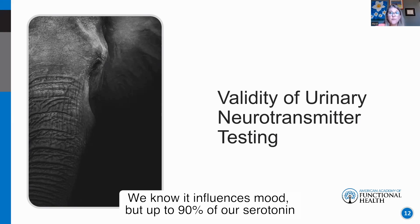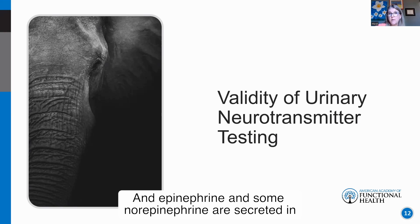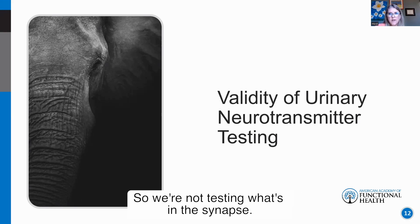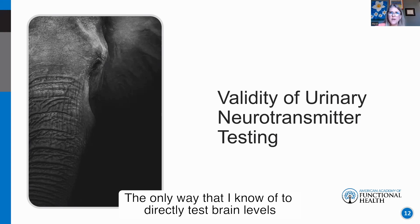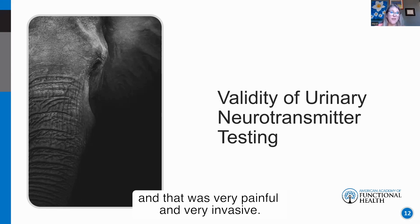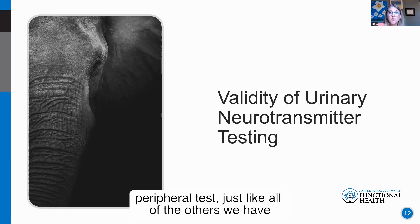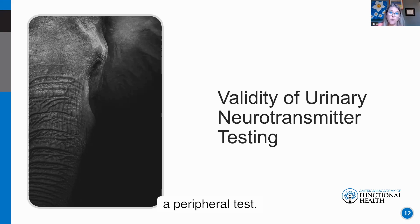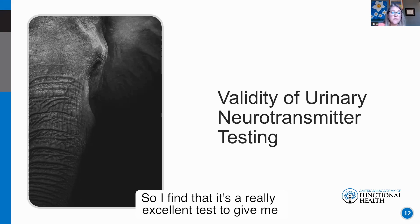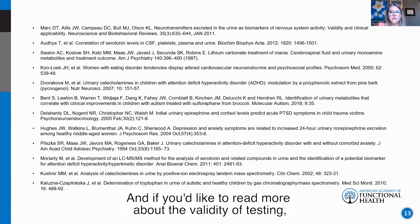Take serotonin as an example — it influences mood, but up to 90% of serotonin is actually secreted in the gastrointestinal tract. Epinephrine and norepinephrine are secreted in the periphery as part of the stress response. So we're testing whole-body levels of neurotransmitters, not just what's in the synapse. The only way to directly test brain levels would be a spinal tap to collect cerebrospinal fluid — painful and invasive. This urinary test is a peripheral test, just like serum and saliva testing. Importantly, treatment changes these markers, so it's excellent for monitoring patient response.